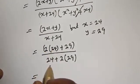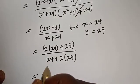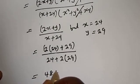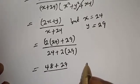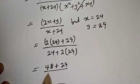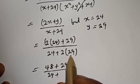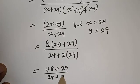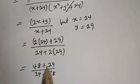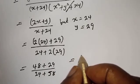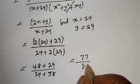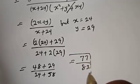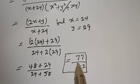2 times 24 is 48, plus 29 equals 77. 2 times 29 is 58, plus 24 equals 82. So the final answer is 77 over 82. If you enjoyed this video, like, share, comment, and subscribe to my channel. Thank you, bye-bye!